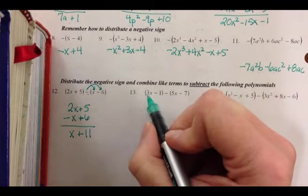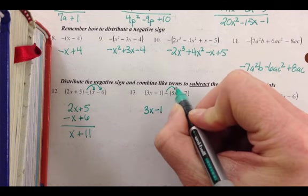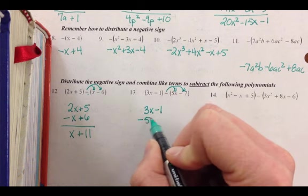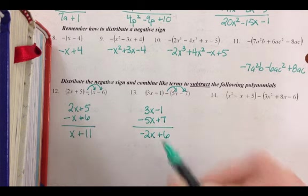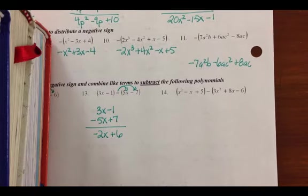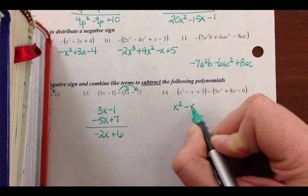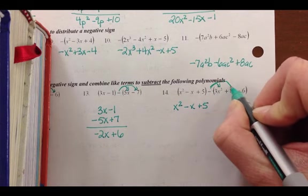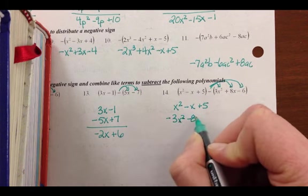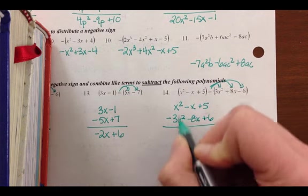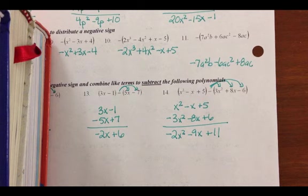Let me do one more with you. So check for distributions. The first one doesn't have anything. So we keep 3x minus 1. The second one needs that negative distributed in. So we have negative 5x and then a positive 7. And when we combine like terms, we get negative 2x plus 6. All right, number 14 is the challenge. I might as well just do this one with you too. So we end up with the first term doesn't have anything to be distributed. x squared minus x plus 5. The second polynomial needs to have a negative distributed. So we have negative 3x squared minus 8x plus 6. When we combine like terms, we get negative 2x squared minus 9x plus 11. We'll be working with this a lot this week. I'll see you in class.